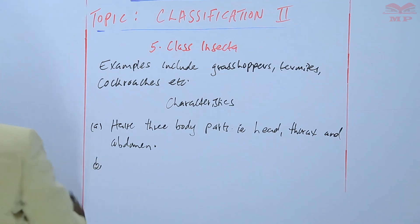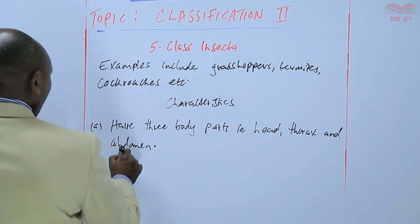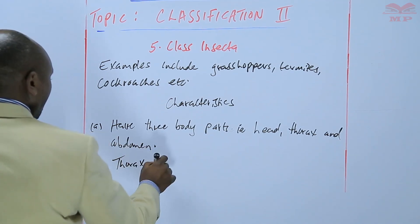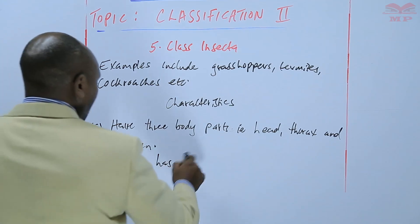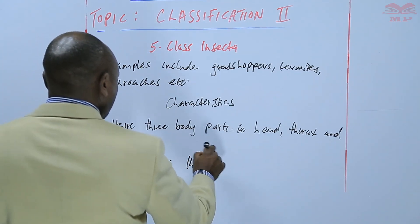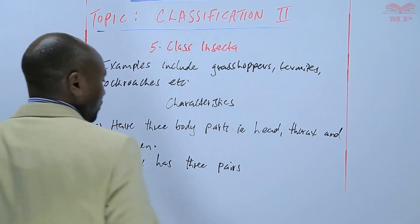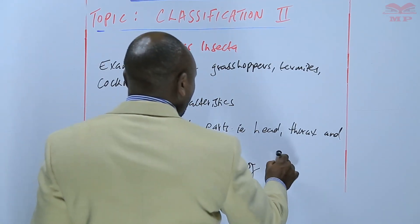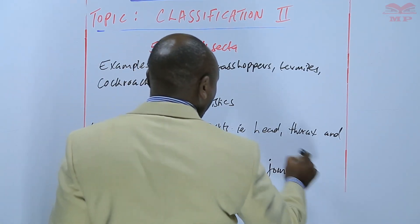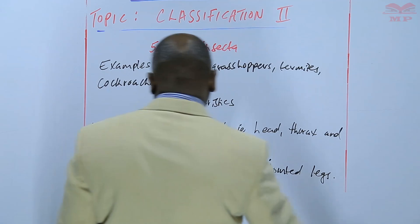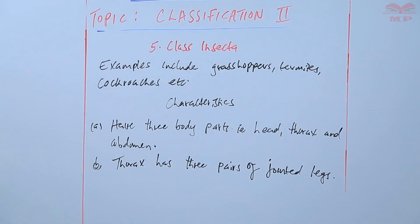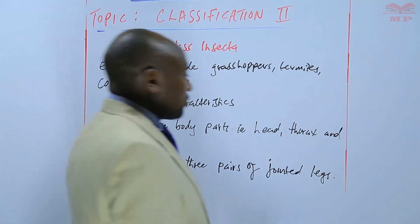Another characteristic that is also unique is that the thorax has three pairs of jointed legs, three pairs of jointed legs, of course modified for locomotion.